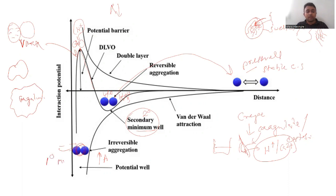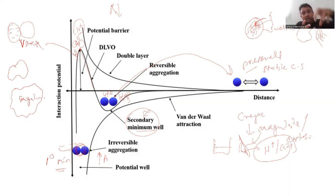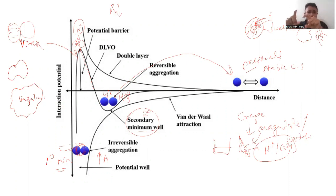After coagulating the latex at the primary minimum, can you convert it back into a colloidal system? Can you dissolve the coagulated rubber in water to remake a colloidal system? You cannot — that is why it is called irreversible aggregation. This is what is learned in rubber processing technology: adding acids at pH 4.4 at room temperature produces coagulation of latex.